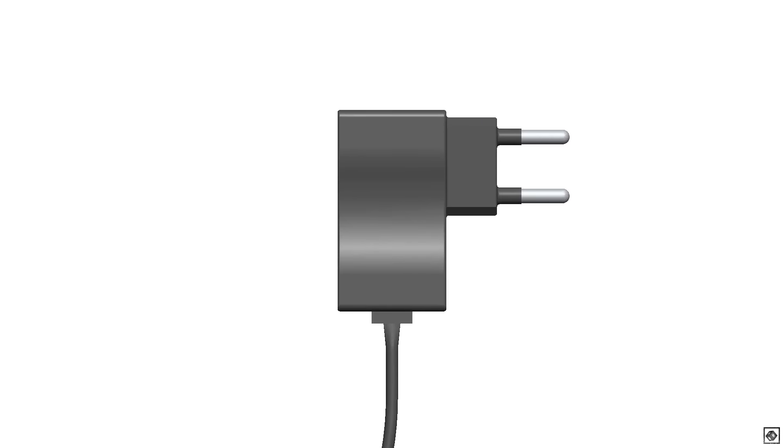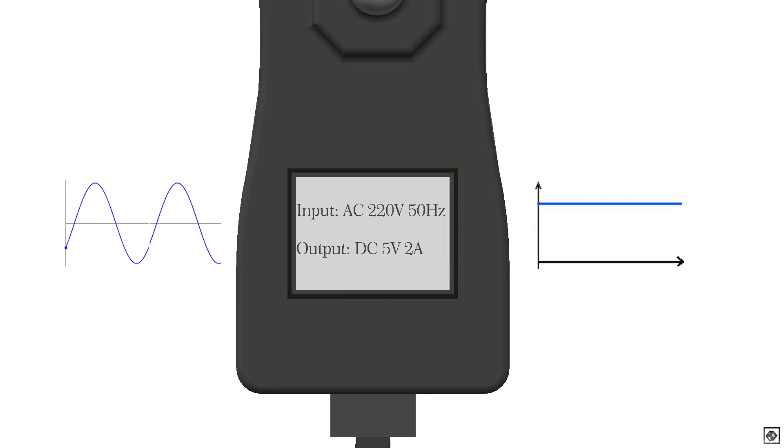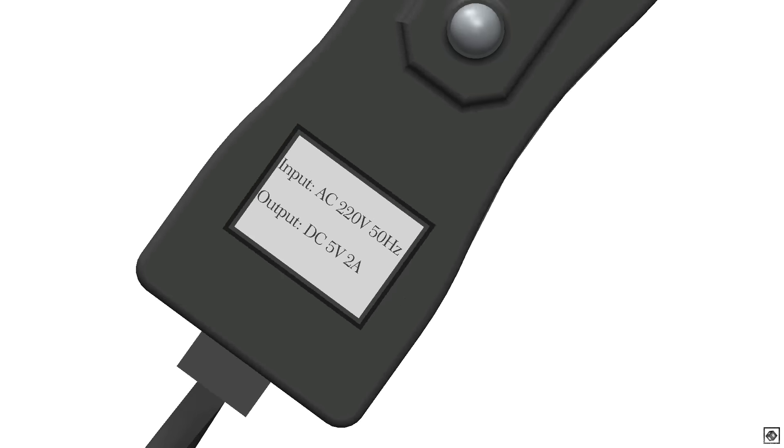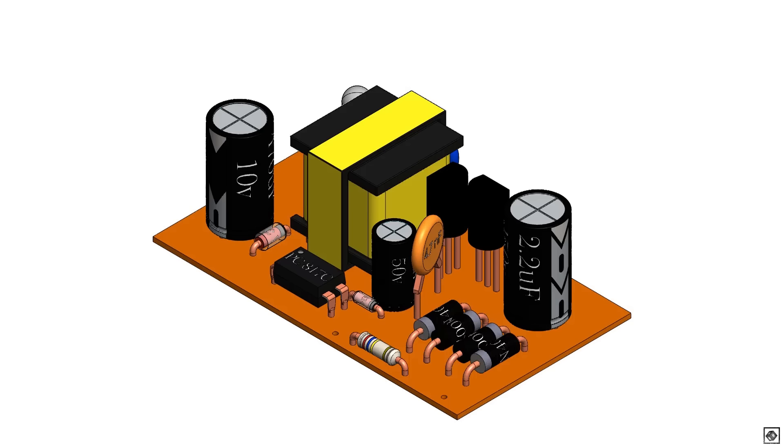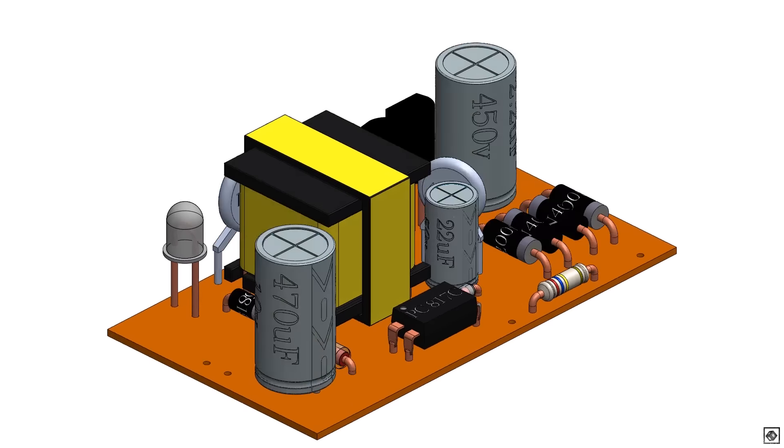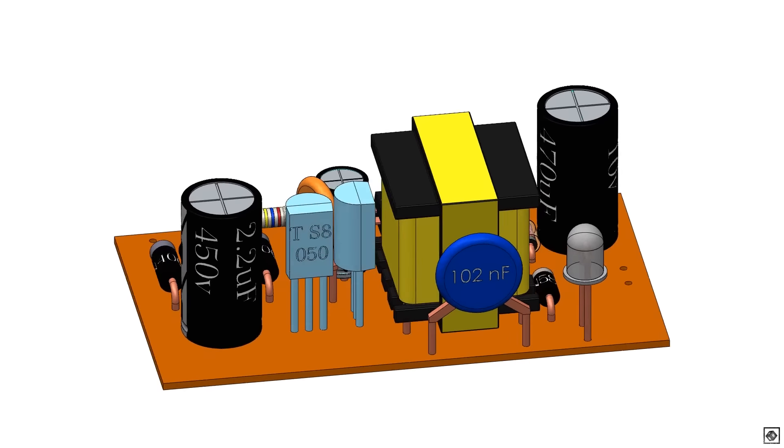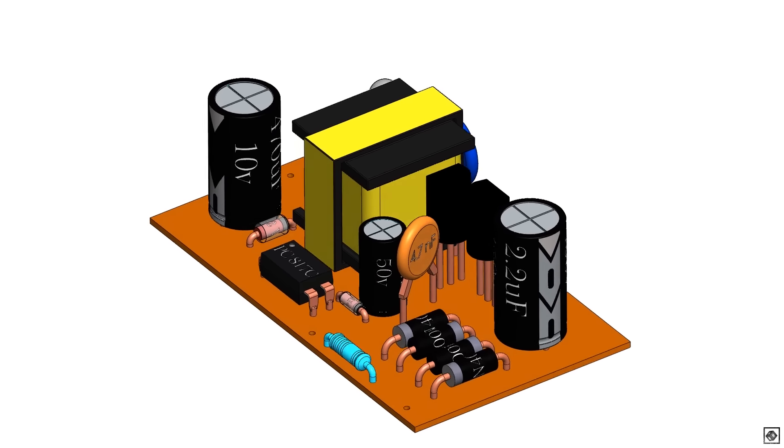This is a normal charger that converts 220 volts AC to 5 volts DC. Let's see what's inside. Now we can see all the electronic components used in it. There are diodes, capacitors, transistors, and resistors.